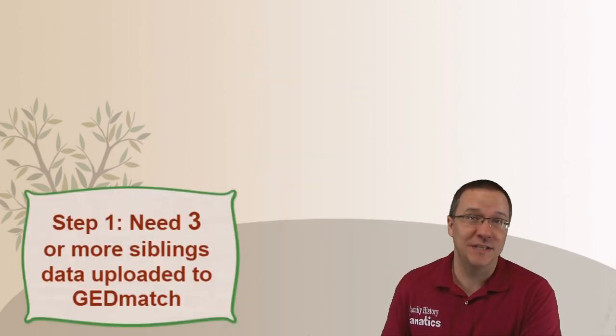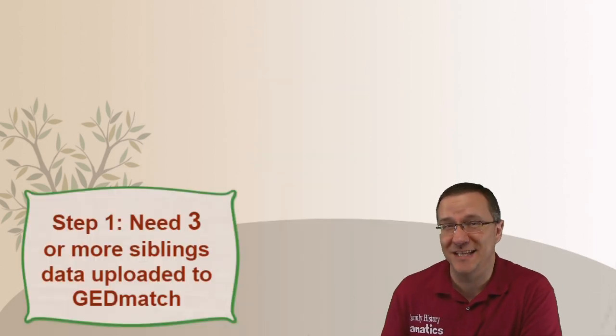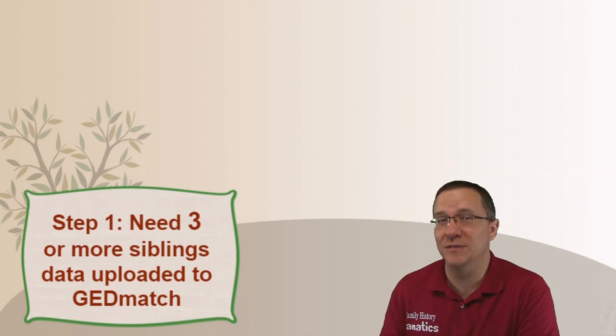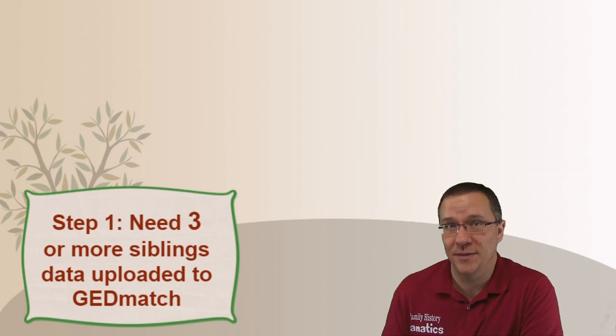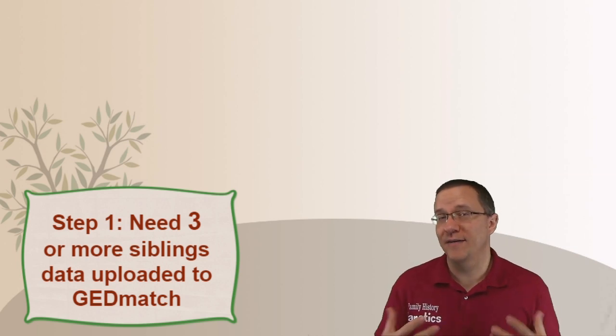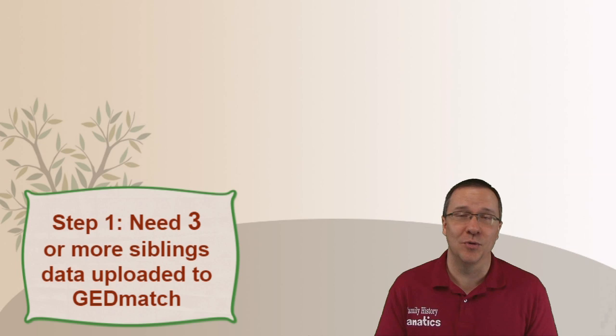Step one of our setup is that we need three siblings, at least three siblings. If you have more siblings that's great, but three siblings is really the minimum to start with. Now you also want to have all these siblings' information uploaded to GEDmatch.